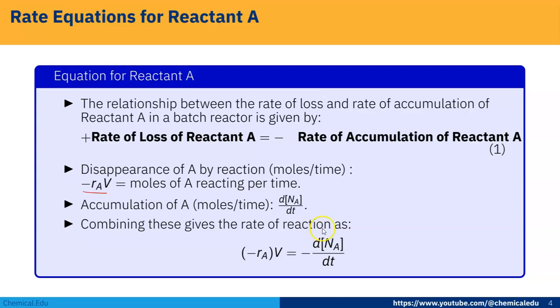Combining this gives the rate of reaction as: the rate loss of reactant that is minus rA into V, and minus sign is there, and accumulation is dNA/dt.